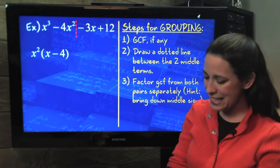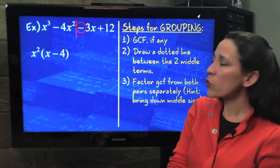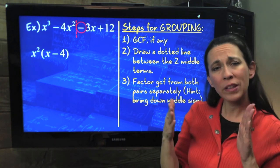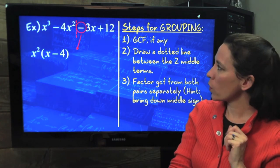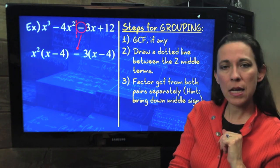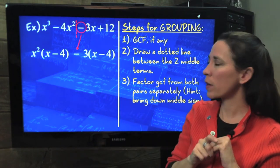Now with the second set, notice you're starting with a negative. And remember, if your leading coefficient is negative, it's good to take out a negative GCF. So we're going to go ahead and take out a negative 3, and again, we'll be left with an x - 4.